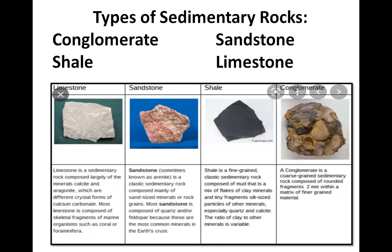Red Fort and Qutub Minar are famous monuments built with sandstone. Shale is made up of hardened layers of fine particles of clay and silt. It is used to make cement and bricks. Limestone forms from the accumulation of shells of dead sea creatures. The main mineral in limestone is calcite. Chalk is a soft limestone. Limestone is easy to cut into blocks and is used in making roads, buildings, and in manufacturing cement.